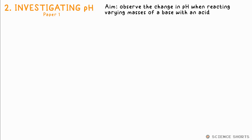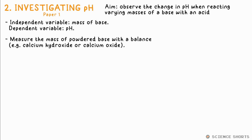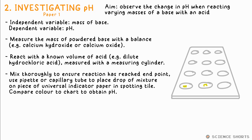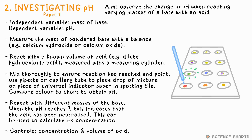Chemistry 2: Investigating pH. We measure the end pH of a reaction between different masses of a powdered base — an alkali like calcium hydroxide or calcium oxide — and a fixed volume of a dilute acid, say hydrochloric acid. After mixing thoroughly, we can take a pipette or glass capillary tube to take a drop and put it on universal indicator paper in the dimple of a spotting tile. We compare the colour produced against the chart and determine the mass needed to neutralise the acid — that will be once it gets to a pH of 7. We could then use moles to calculate the concentration of the acid if needed.